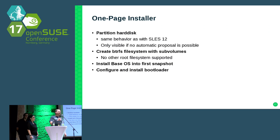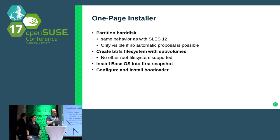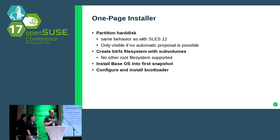We changed the workflow of the installer and created what we call the one-page installer. You have one page with a few pieces of information we need from you. The partitioning is done fully automatically — similar to CES 12 — and only visible if there are errors. We automatically create a BtrFS root filesystem with subvolumes, install the base OS into the first snapshot, and configure and install the bootloader.